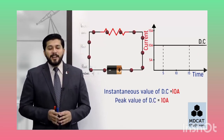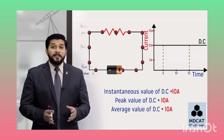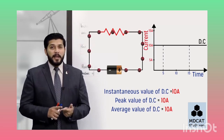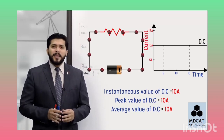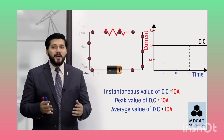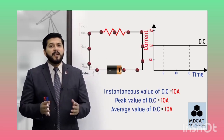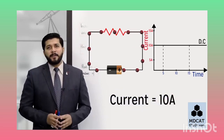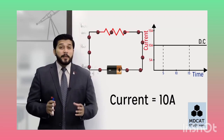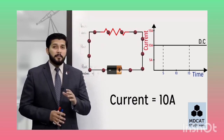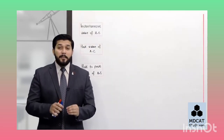اگر average current دیکھیں تو current change ہی نہیں ہوا تو average بھی 10A ہی آئے گا۔ یعنی instantaneous value of current بھی 10A، peak value بھی 10A، average value بھی 10A - تو پھر ہمیں different terms use کرنے کی ضرورت نہیں۔ کیونکہ جب answer ہی 10A آنا ہے تو میں DC کے اندر simply کہہ دیتا ہوں current 10A ہے - وہ peak بھی ہوگا، average بھی ہوگی، instantaneous بھی ہوگی۔ اس وجہ سے chapter 13 میں different values discuss نہیں کیں۔